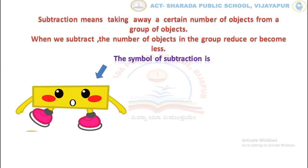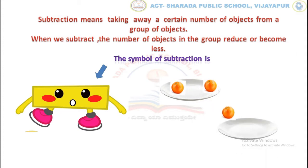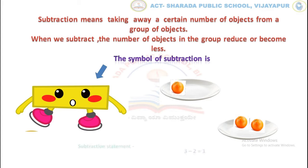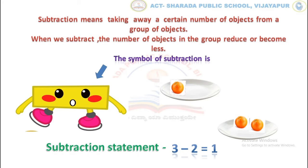For example, look at the image. There are three oranges kept in a plate. If we take away two oranges of them, how many oranges are remaining? One orange is left in the plate. This act of taking away is known as subtraction. That is, 3 minus 2 equals to 1.